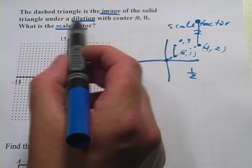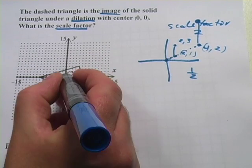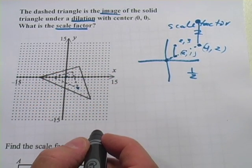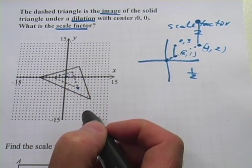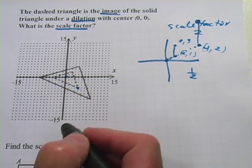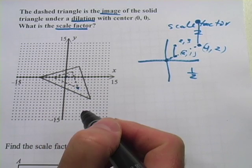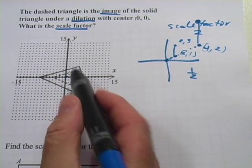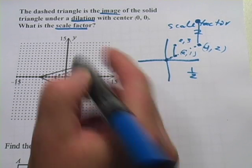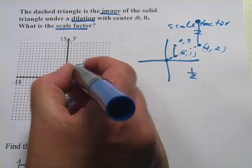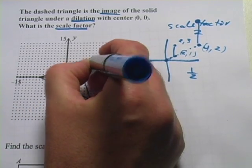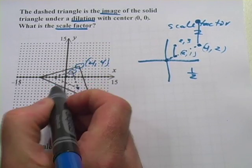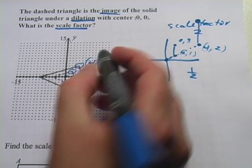It says this is under a dilation with center (0,0). That's good, so I don't really have to worry about anything extra with that when the center is (0,0). What is the scale factor? Well, how are we going to figure this out? What I would suggest doing is, if you have a figure like a triangle, just pick a point and a corresponding point on both what you started with and then the image. And I think I'll just pick this point and this point right here. This point is, let's see, (4,4), oh, that's easy.